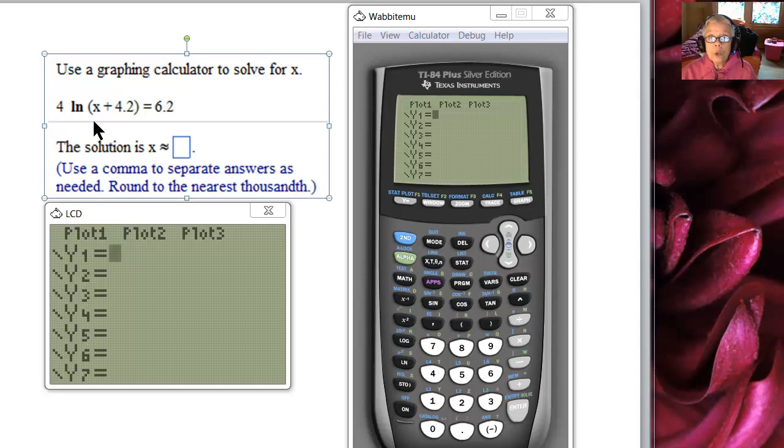I'm going to take the left side of the equation and put it in y1 and the right side and put it in y2, and we'll get an approximate answer. In y1: 4 ln(x plus